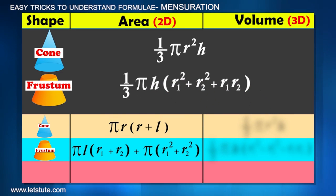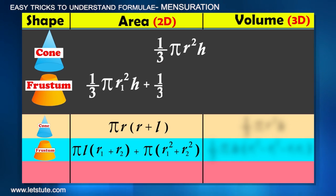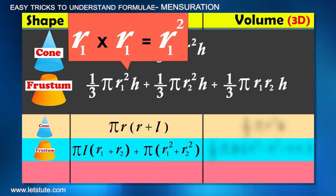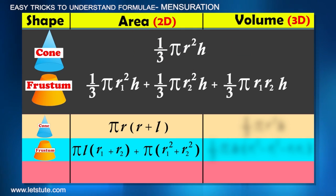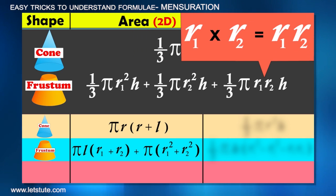And for volume, as with cone, it is 1/3πr²h. Similarly, for frustum, it is 1/3πr₁²h + 1/3πr₂²h + 1/3πr₁r₂h. Like r₁ multiplied with r₁ gives r₁². In the 2nd term, r₂ multiplied with r₂ gives r₂². And in the 3rd term, r₁ is multiplied with r₂.